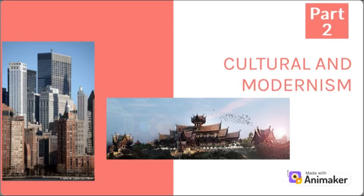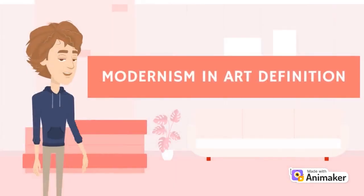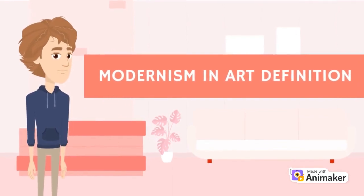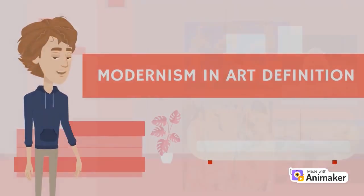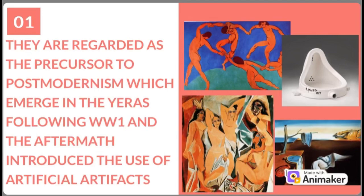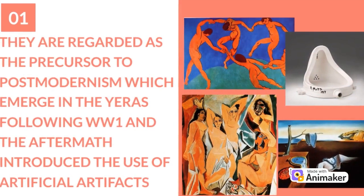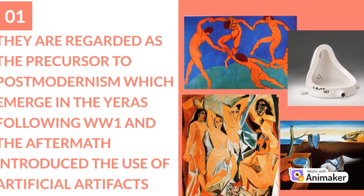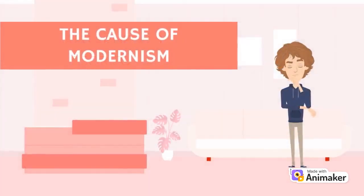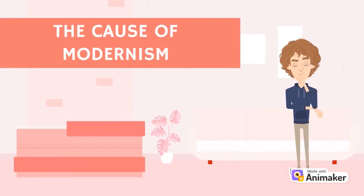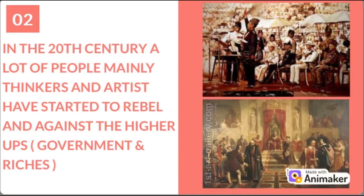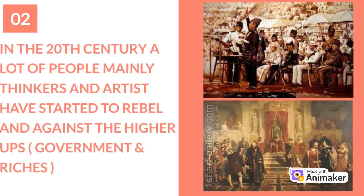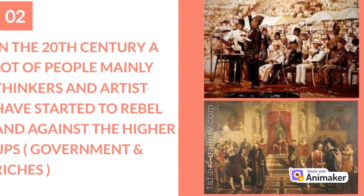Modernism in art — they are regarded as the precursor to most post-modernism, which emerged in the years following World War One, introduced by the use of artificial artifacts. The cause of modernism in the 20th century: a lot of people, mainly thinkers and artists, started to rebel against the higher arms, which are the government and the rich people.